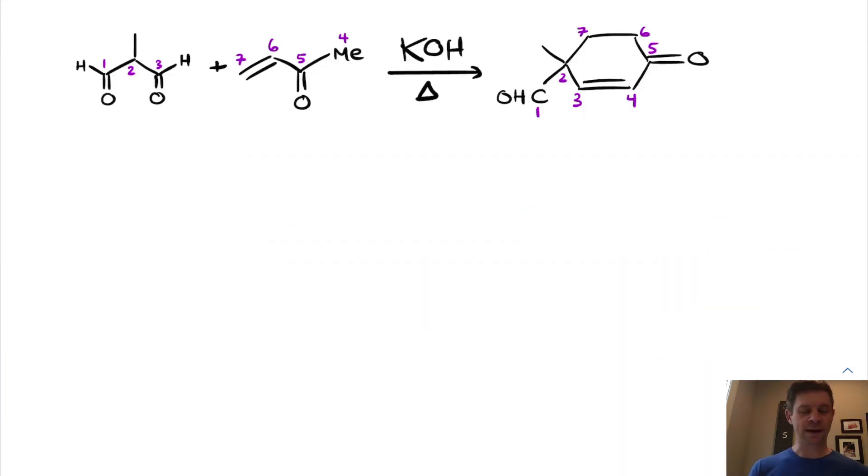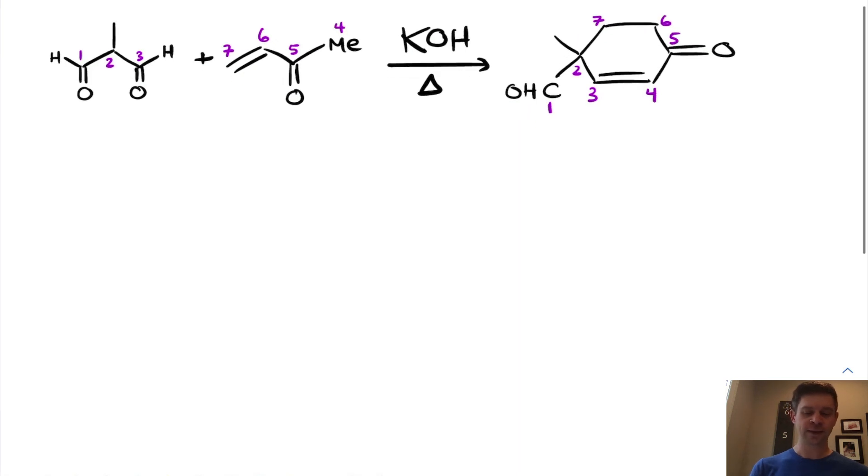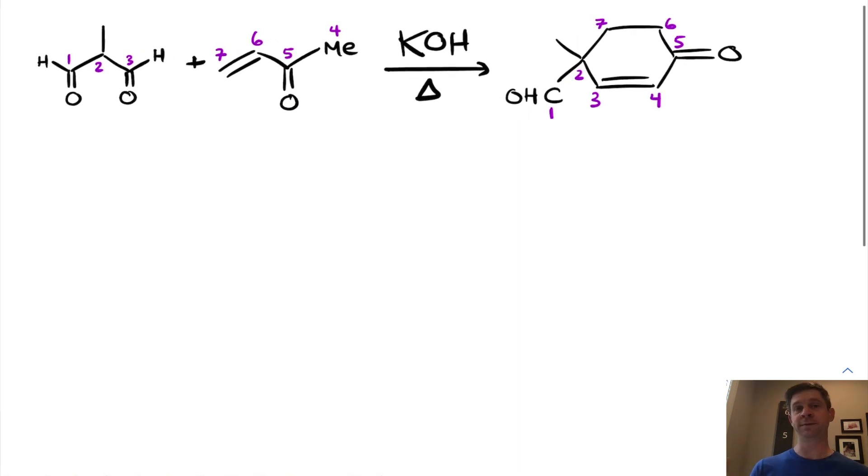Here we're looking at what that reaction would look like in the forward direction, and I just wanted to show this as, for example, what you would draw if you were applying the Robinson annulation in the forward direction. We would need the carbon numbering, of course that's not necessary, but we would need base. Base is necessary to generate the enolate intermediates involved in this reaction, and heating is typically used to ensure that we get all the way to the condensation product.